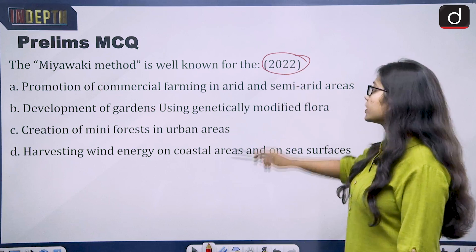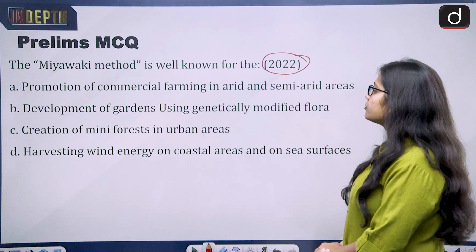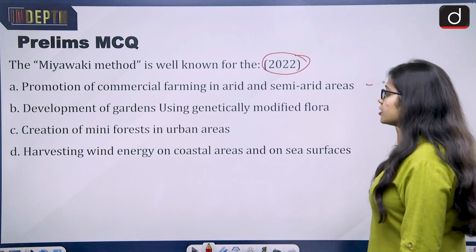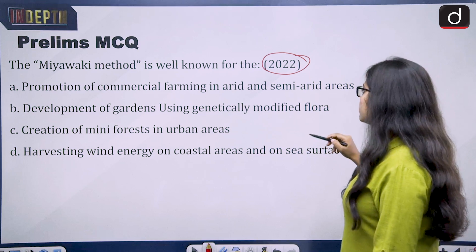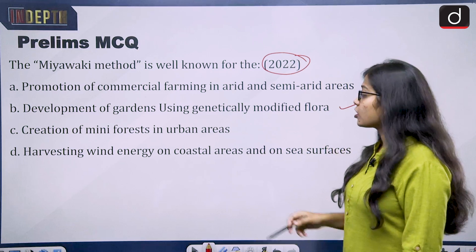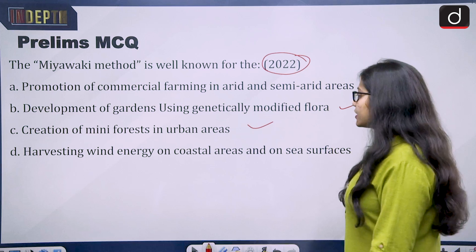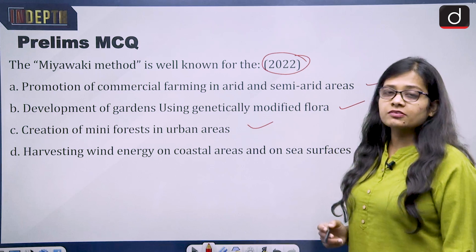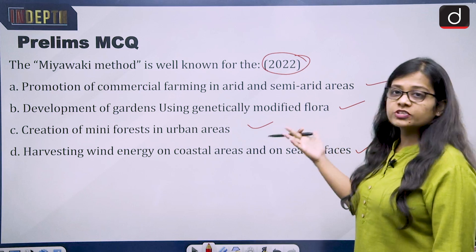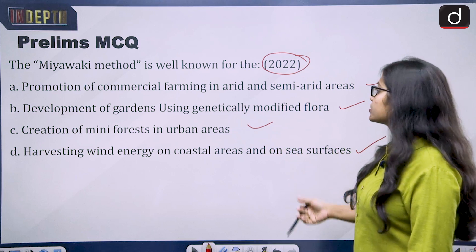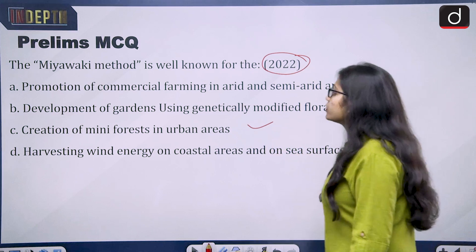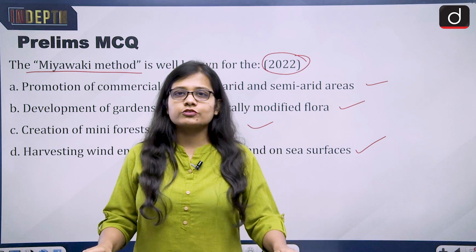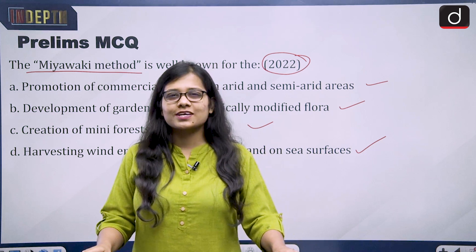A PYQ from 2022 Prelims: 'The Miyawaki method is well known for: (A) promotion of commercial farming in arid and semi-arid areas, (B) development of gardens using genetically modified flora, (C) creation of mini forest in urban areas, or (D) harvesting wind energy on coastal areas and sea surfaces.' Please tell the answer in the comments. That's all for today — thank you for watching. Keep reading and keep writing.